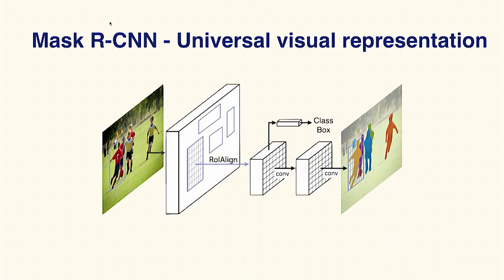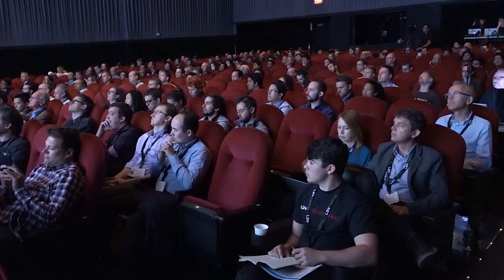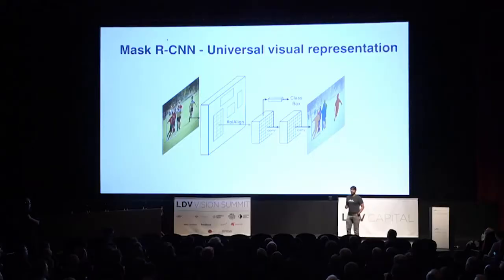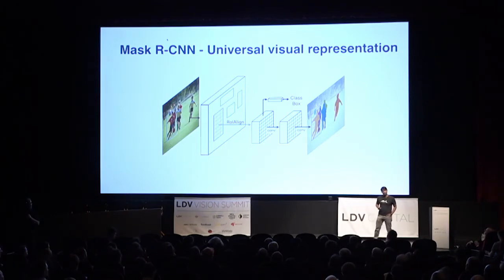If you think about what Lumos is trying to do, it's trying to learn a universal visual representation irrespective of the kind of problem we are trying to solve. Recently at F8, the Facebook developer conference, we talked about Mask R-CNN. This work came out of Facebook AI Research — a single network doing classification, detection, segmentation, and human pose estimation. Think about it: just five years ago, nobody would have believed you could have one network with the same compute, running on all photos and videos, giving all of this. This is the world we are moving to. There is a good chance we'll be able to build a visual cortex — a universal visual representation.